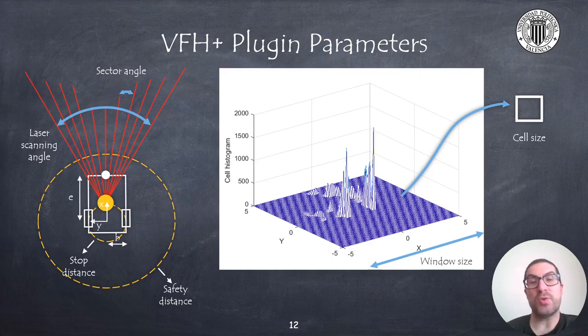The safety distance is used to enlarge laser detected points, so they have a possible influence on neighboring sectors, while the stopping distance determines the region from which the robot must stop, if the target is within that region. And the window size allows you to determine the size of the cell histogram. This cell histogram is actually used to build the primary histogram. And a fundamental parameter is also the cell size, which determines the resolution of that cell histogram.